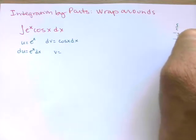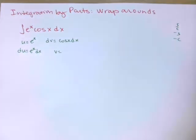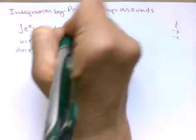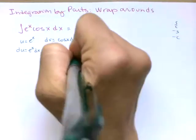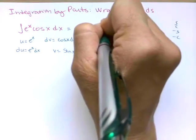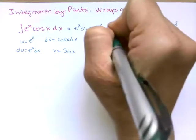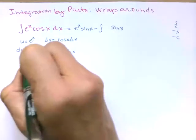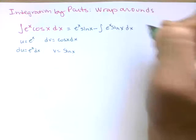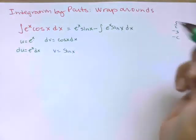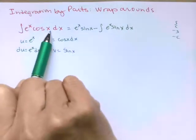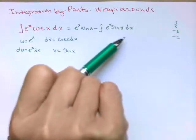This becomes u times v minus the integral of v du. I'm kind of keeping it the same, so our v du looks the same as what we started with except instead of a cosine I've got a sine, but I still don't know what that is.